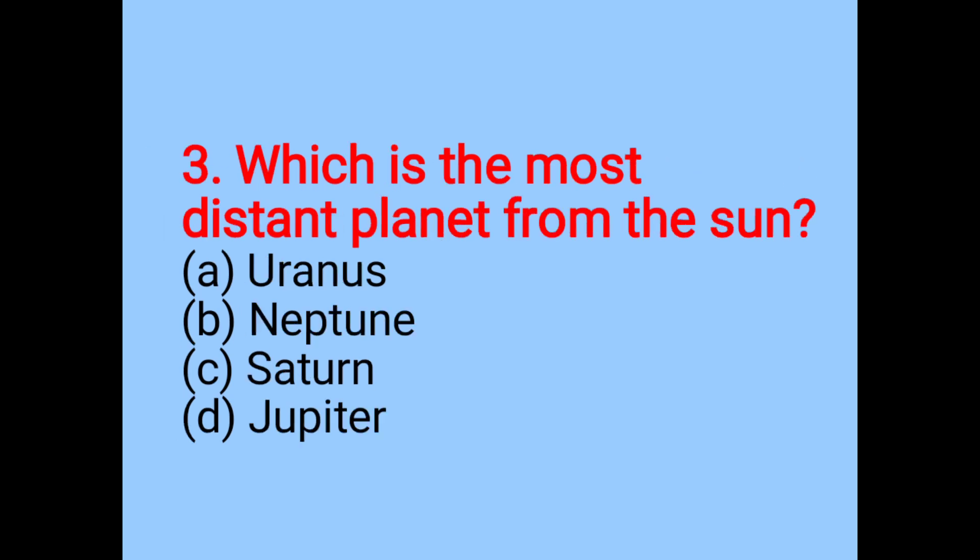Which is the most distant planet from the Sun? The most distant planet from the Sun is Neptune.